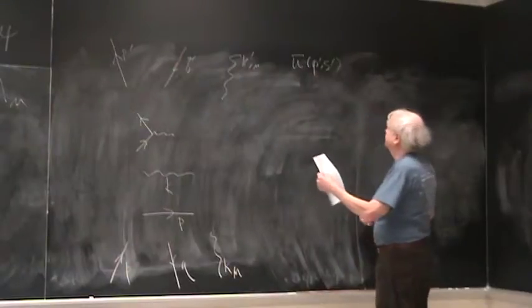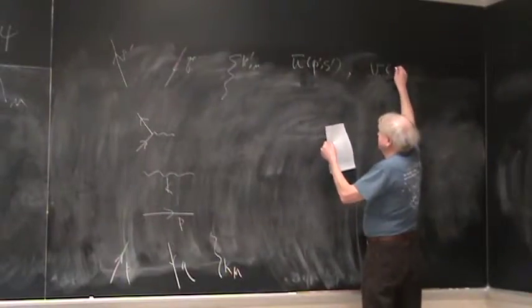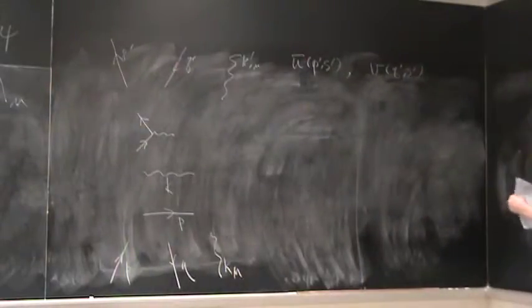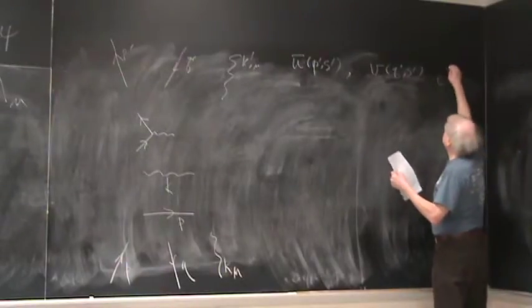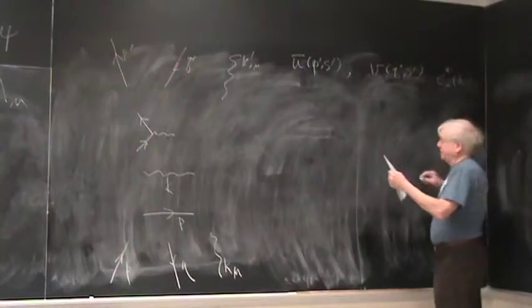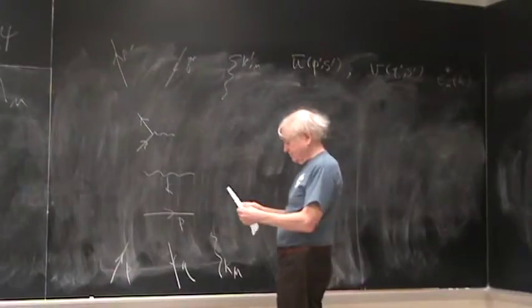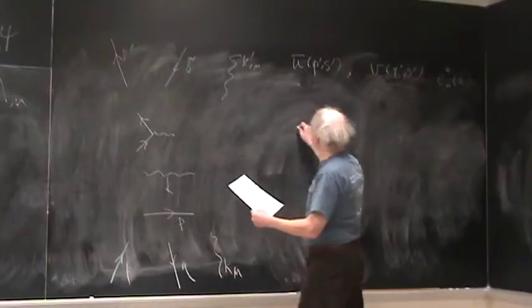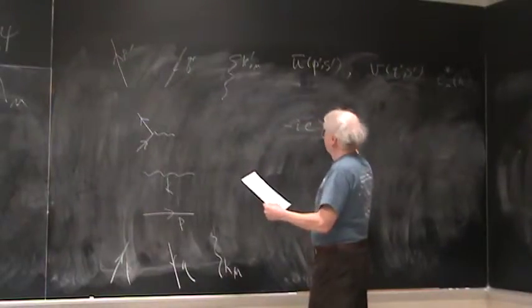And then with each of these outgoing things, you associate for an outgoing electron ū(q', s'). For an outgoing positron it's v(q', s'), and for an outgoing photon it's ε*^μ(k'). For a vertex, what you put in is minus i e γ^μ.